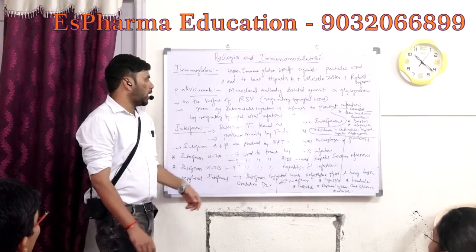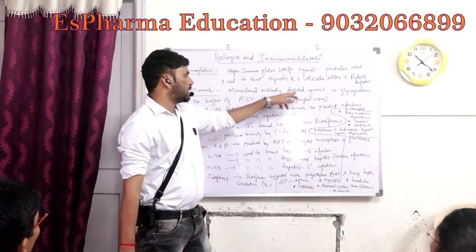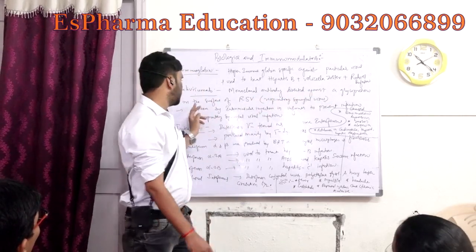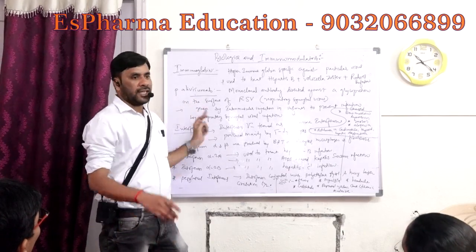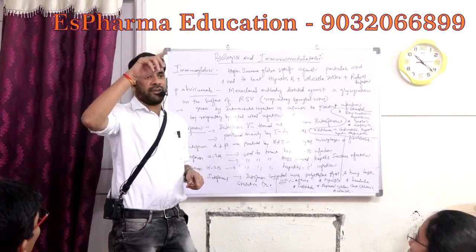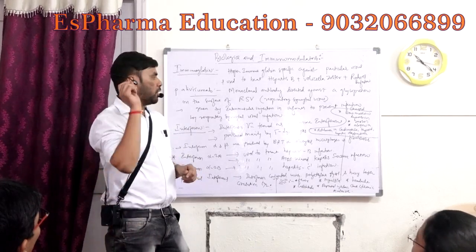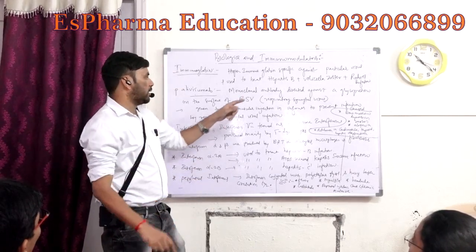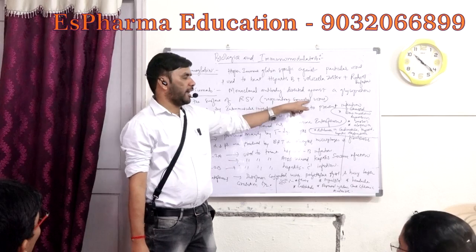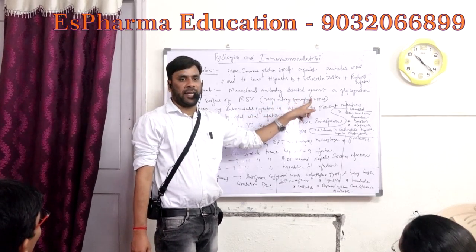The monoclonal antibody is a glycoprotein directed against a glycoprotein on the surface. On the surface of the virus, we have some antigenic glycoproteins. Palivizumab will go and bind to the surface of respiratory syncytial virus and will kill that virus.